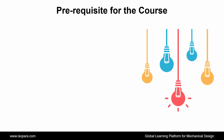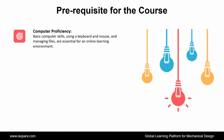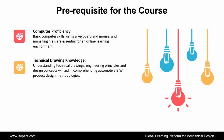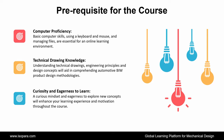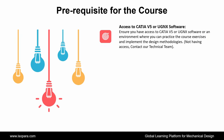Now we see the prerequisites required for this course. First is Computer Proficiency — basic computer skills using a keyboard, mouse, and managing files are essential. Second is Technical Drawing Knowledge — understanding technical drawings, engineering principles, and design concepts aids in comprehending automotive BIW design methodologies. Third is Curiosity and Eagerness to Learn. Fourth is Access to CATIA or UGNX Software — ensure you have access to CATIA or UGNX software to practice course exercises. If not, contact our technical team.